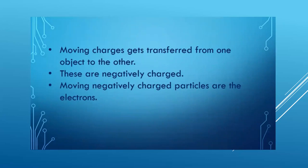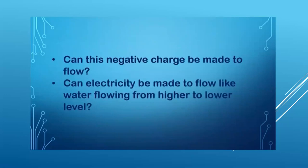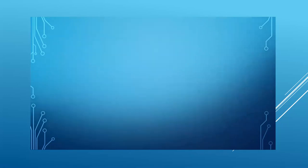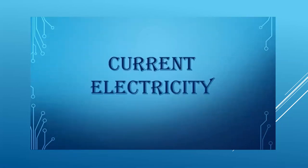Moving charges are negatively charged. The moving negatively charged particles are the electrons. Can this negative charge be made to flow? Can electricity be made to flow like water flowing from a higher level to a lower level? You have learned that a force will have to be applied to put a stationary object into motion. We get current electricity when electrons in an electrical conductor are made to flow.